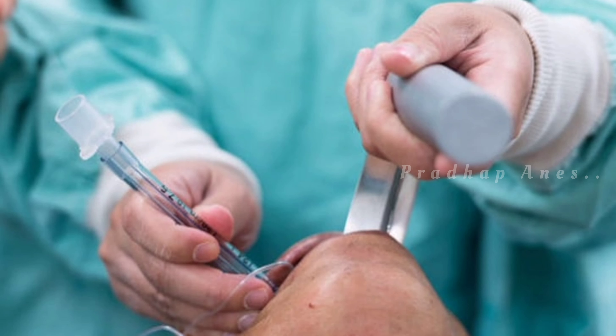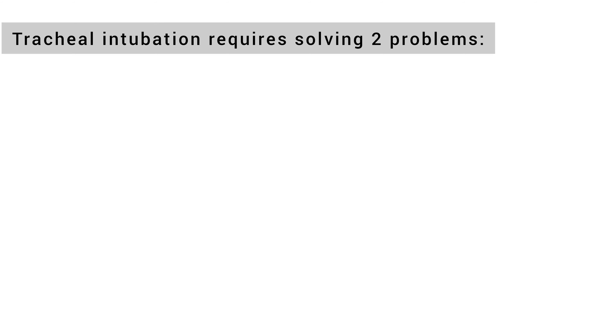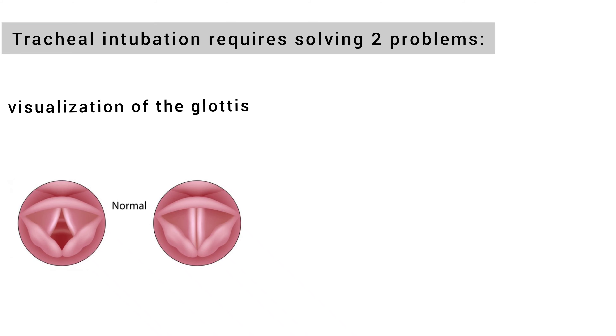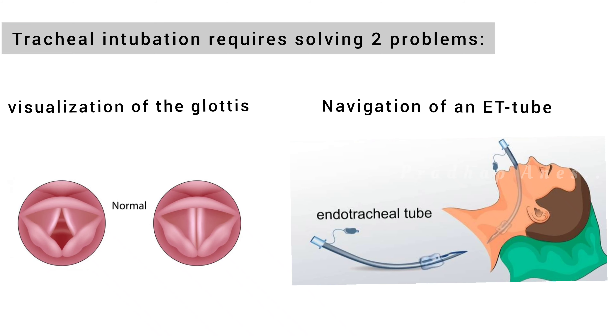Now we'll see how to perform intubation on a patient with a supraglottic tumor. In this case, tracheal intubation requires solving two problems: visualization of the glottis and navigation of an endotracheal tube (ETT) into the trachea.